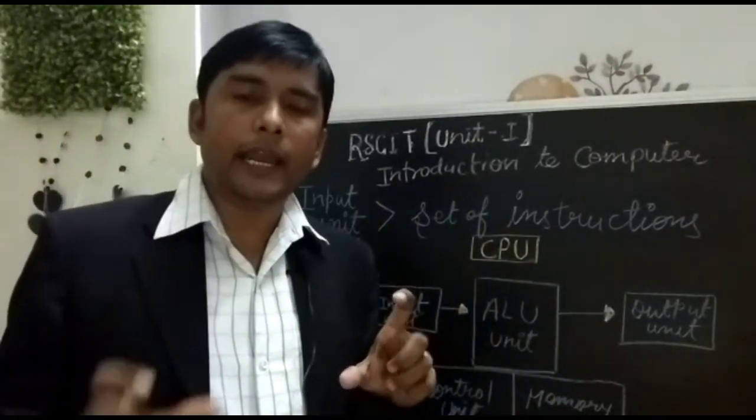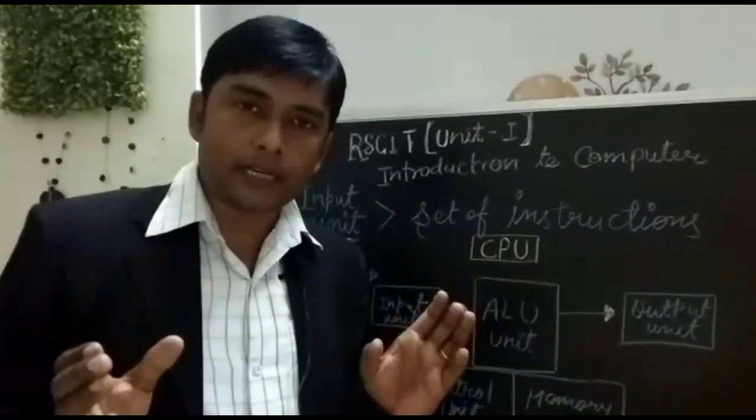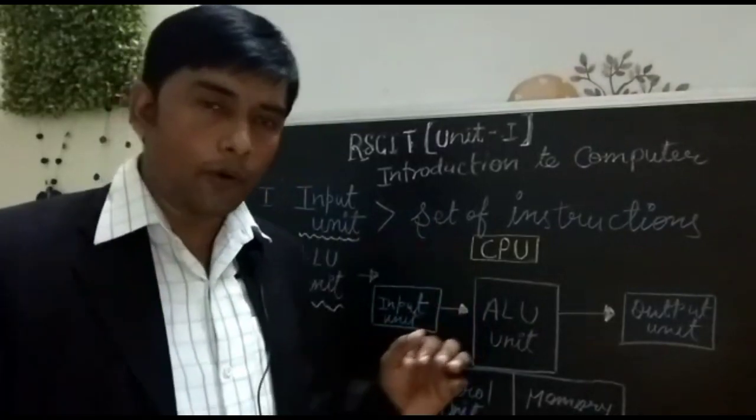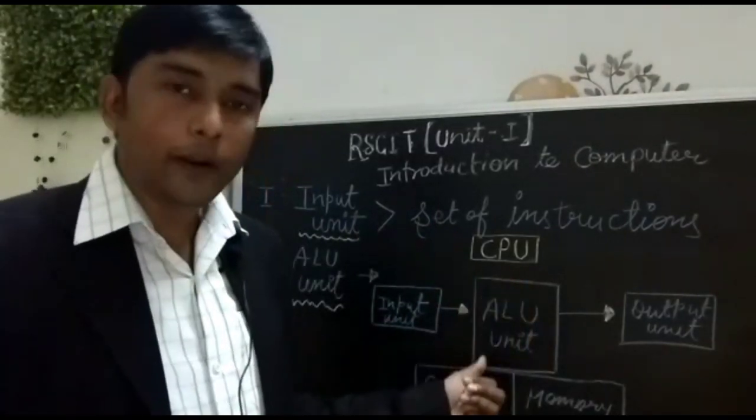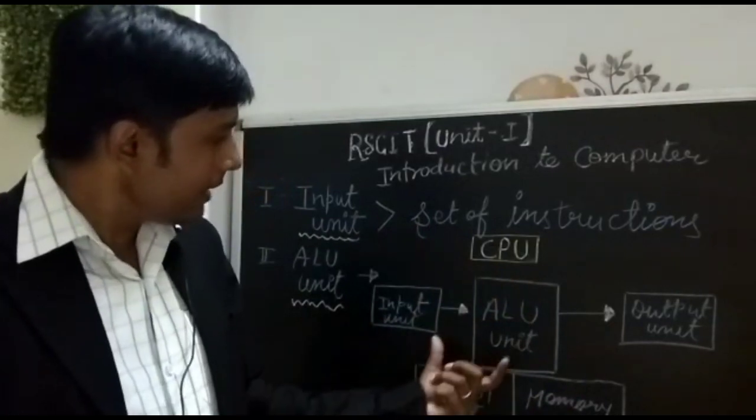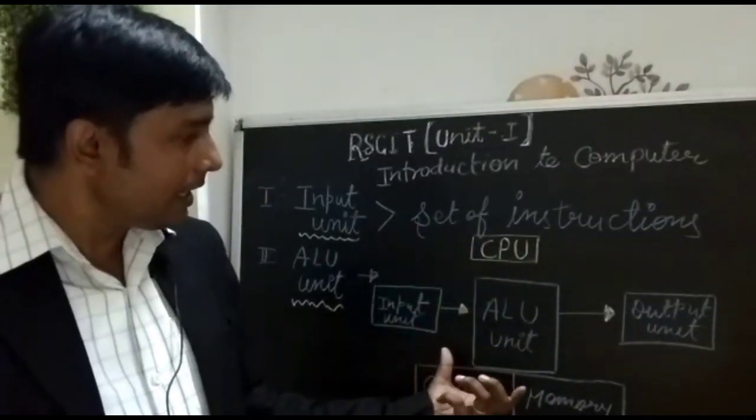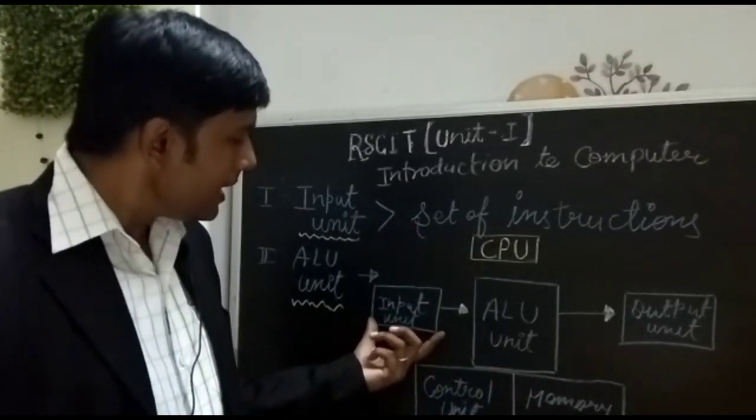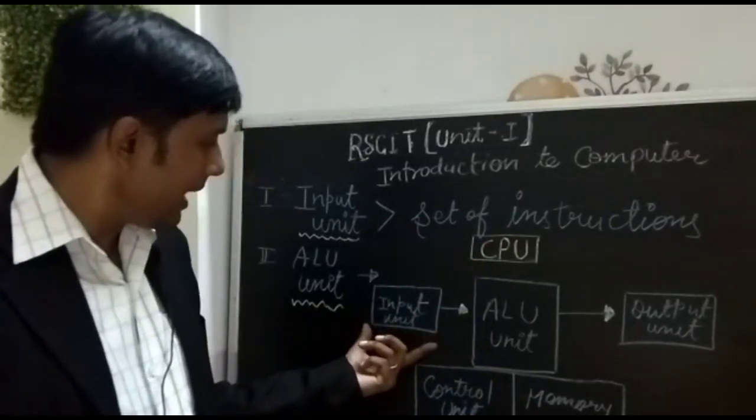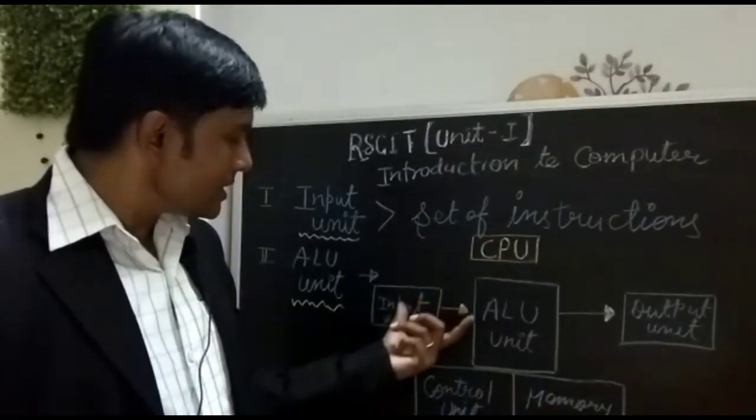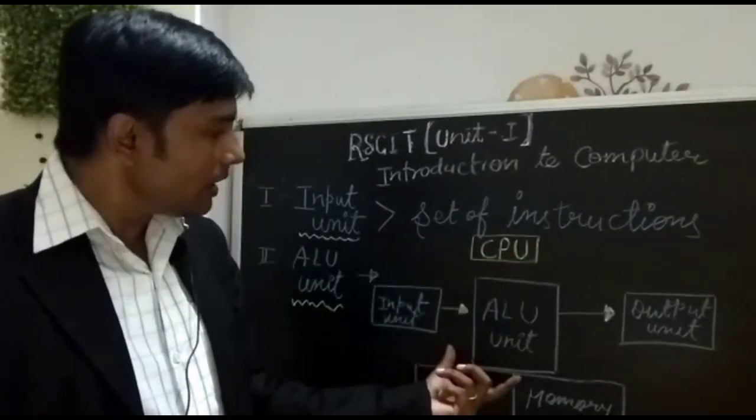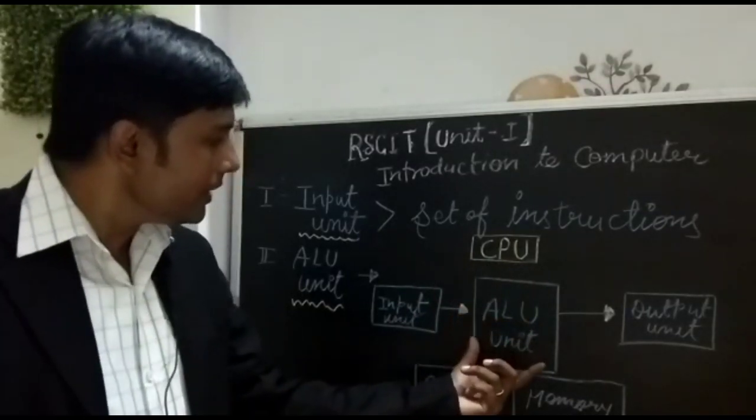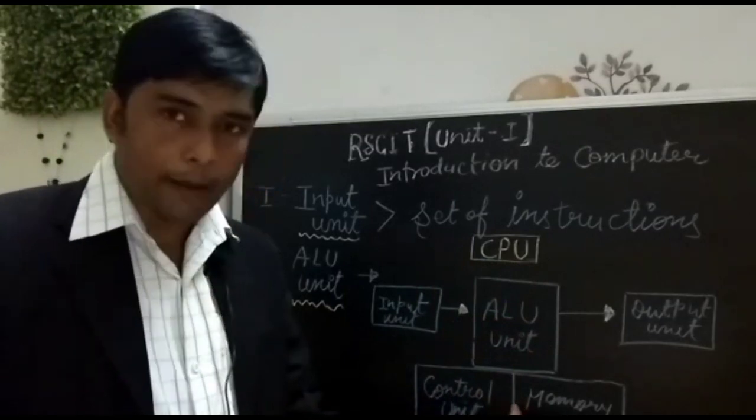Which performs multiplication, subtraction, division and logical instructions. This diagram is a structure of computer diagram in which we can easily understand that if a user gives the input set of instructions which we send to CPU to reach the CPU and the CPU processes the instructions through ALU unit, control unit and memory unit.